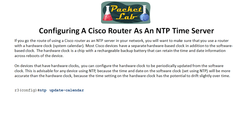You also want to use a router that has a hardware clock, because it uses the software clock as its NTP clock source. If your NTP master reloads and it doesn't have a hardware clock, suddenly it thinks it's 1993. Depending on how it comes up, it may not advertise at all, or it will advertise the time as 1993, so having a hardware clock is important.